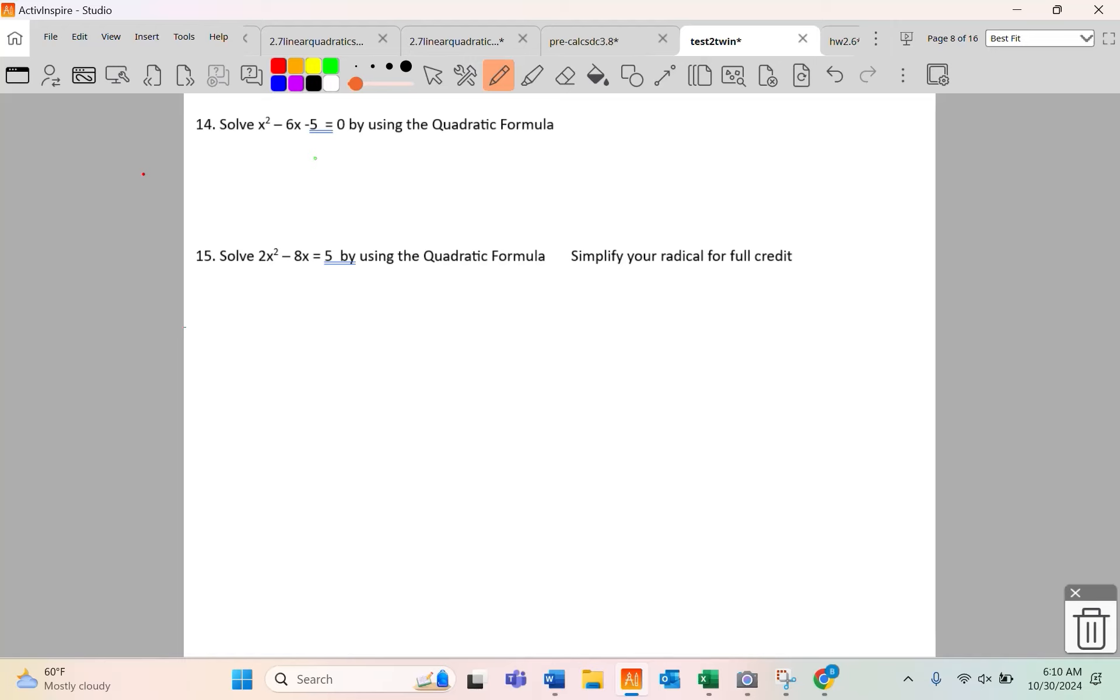14 and 15 are both quadratic formula. Hopefully you know it. It's x equals negative b plus or minus square root b squared minus 4ac all over 2a. I know there's a handful of y'all that can't pick out a yet, but a is the understood one in front of x squared. b is negative 6 and c is negative 5, and then we just throw stuff in.